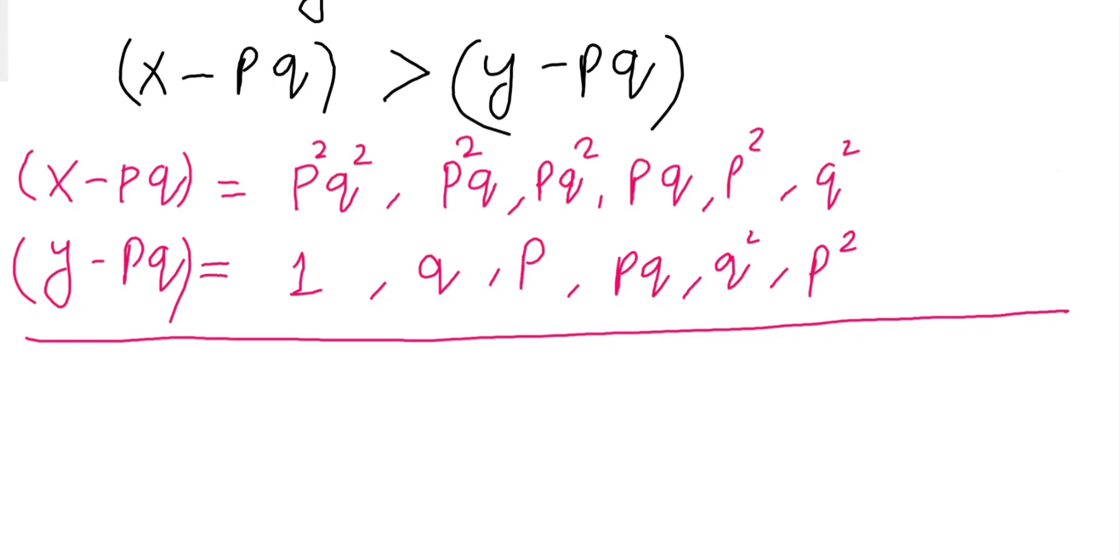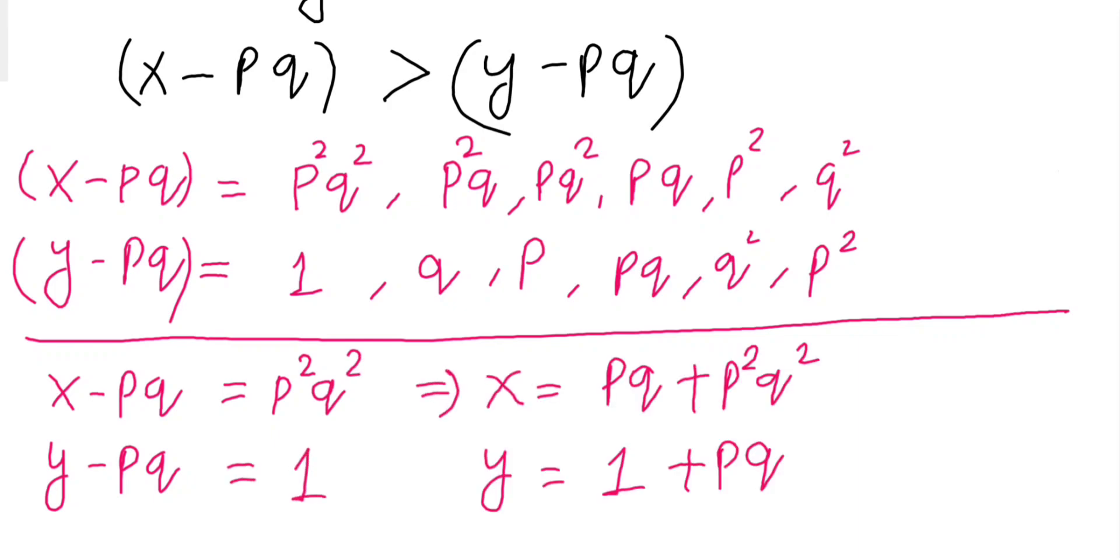Now, let us solve one by one case. So if x minus pq is p square q square and y minus pq is 1, therefore this is our first pair of solution.